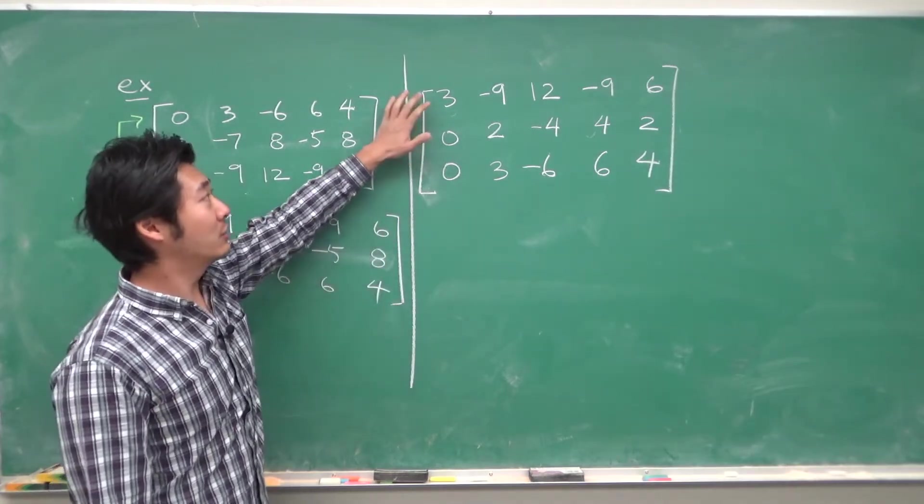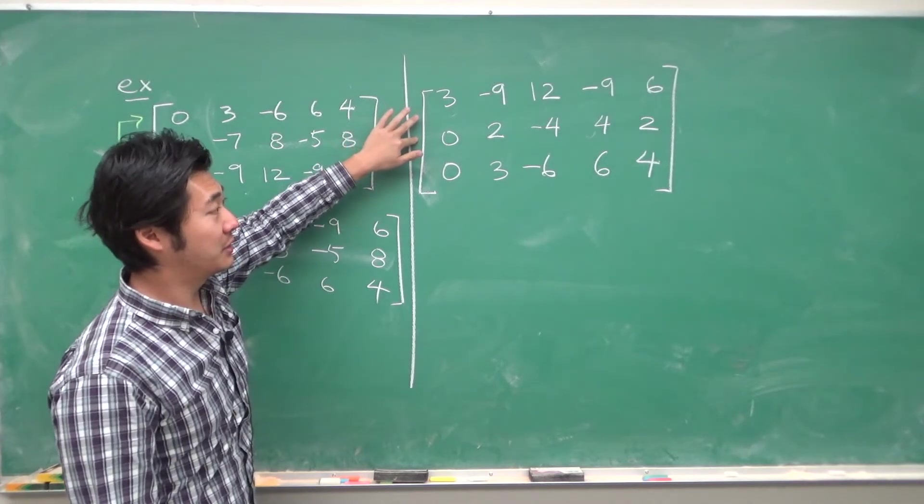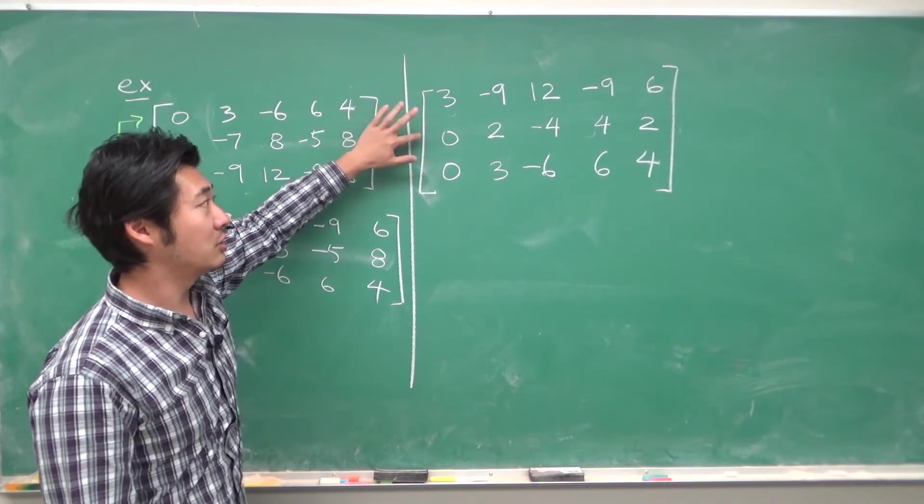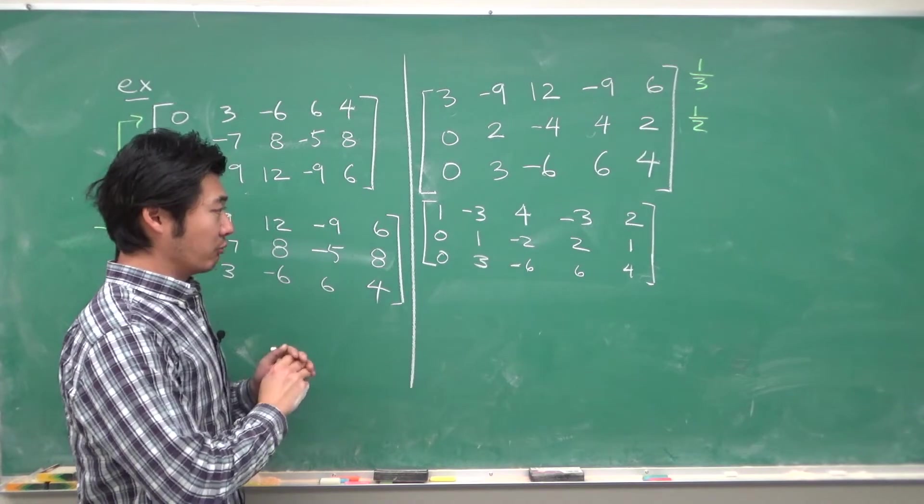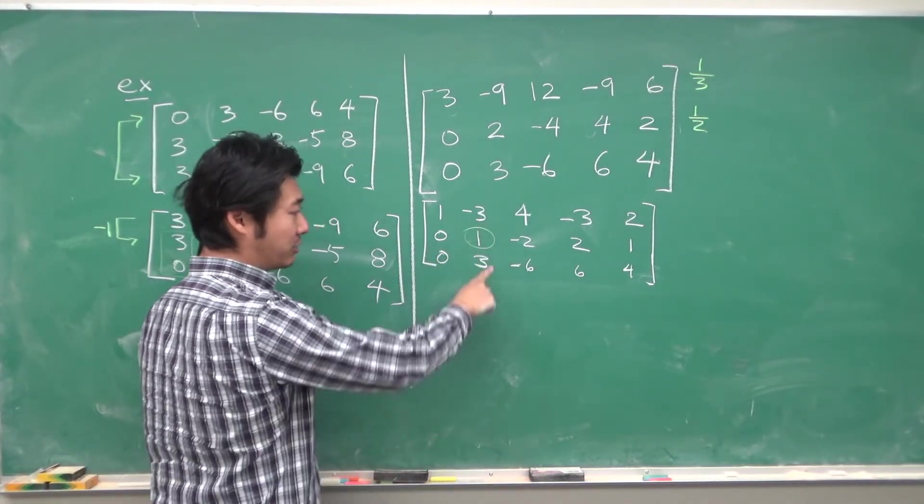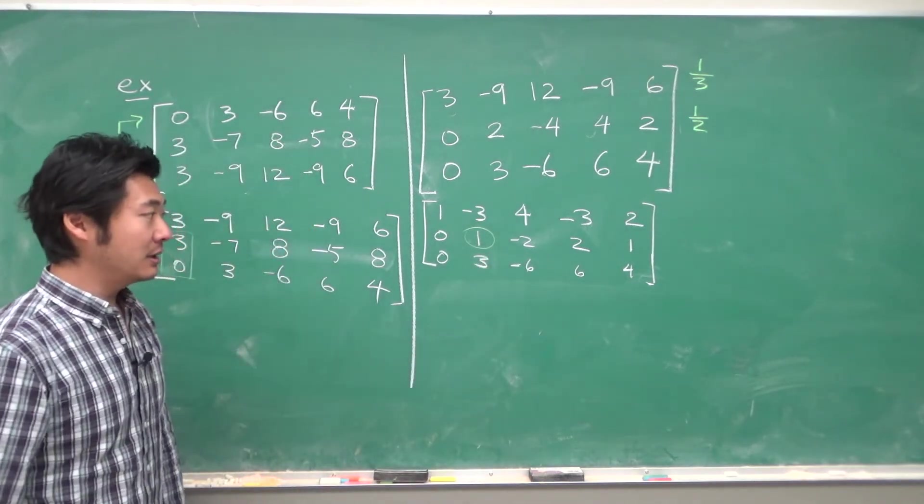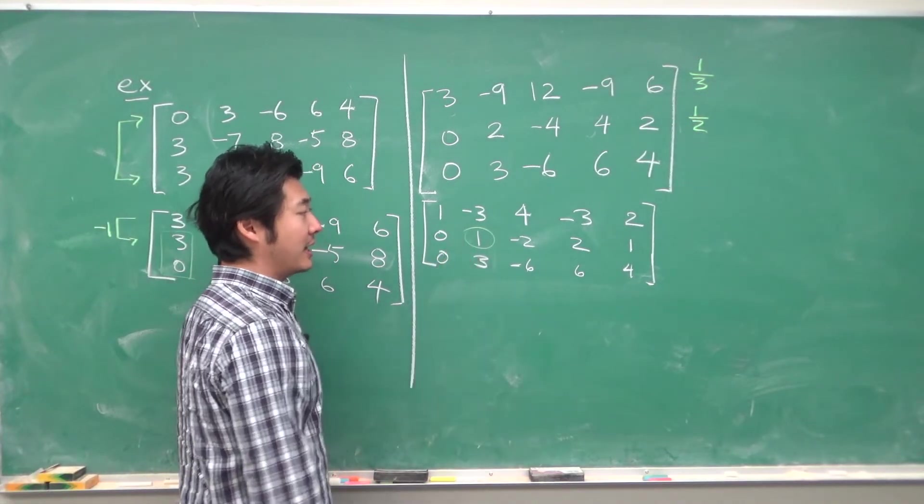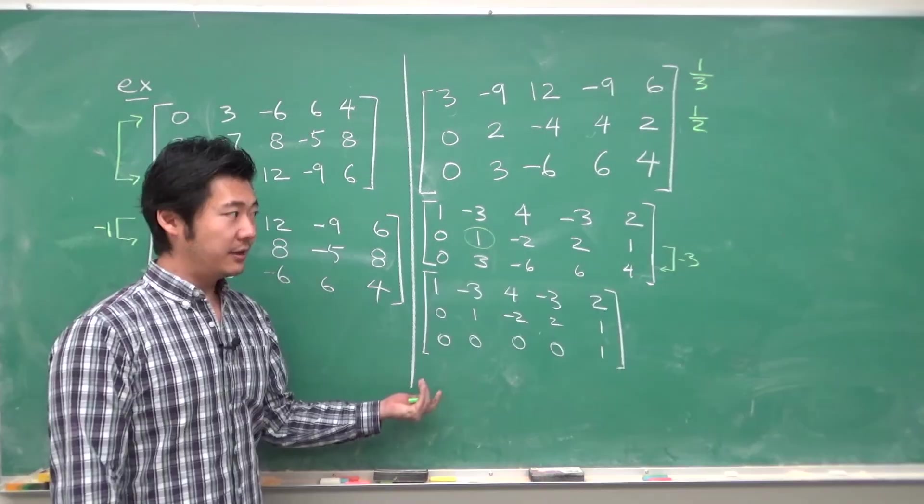Now, notice that every entry in row 1 is a multiple of 3, and every entry in row 2 is a multiple of 2. So, let's divide row 1 by 3 and row 2 by 2. When we do this, we get this matrix. Now, we repeat the steps again. So, we see our leading entry is here. And so, we want to make sure every number below the leading entry is 0. So, we can take negative 3 times row 2 and add it in to row 3. When we do that, we get this matrix.